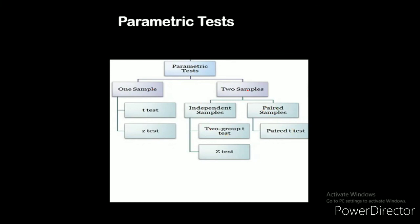For more than two samples, the hypothesis on more samples uses ANOVA. ANOVA is one of the parametric tests used. These are all the different parametric tests. I will stop here.